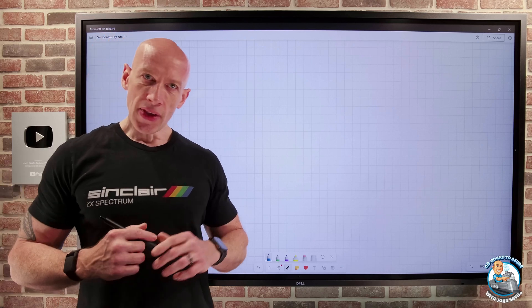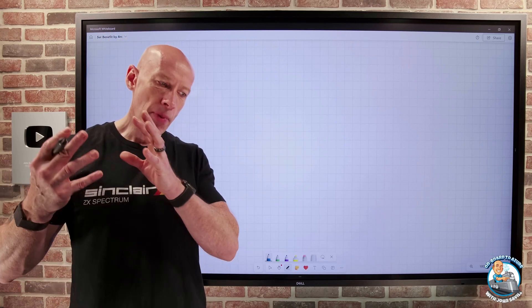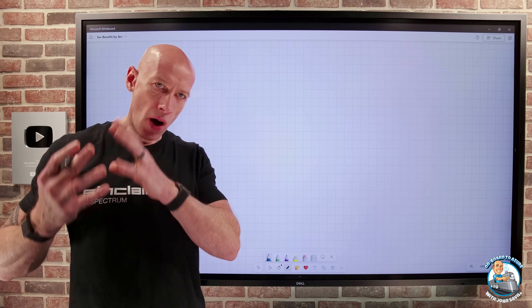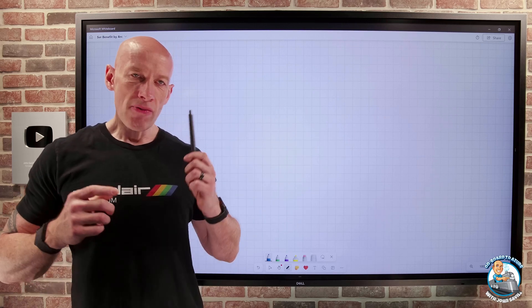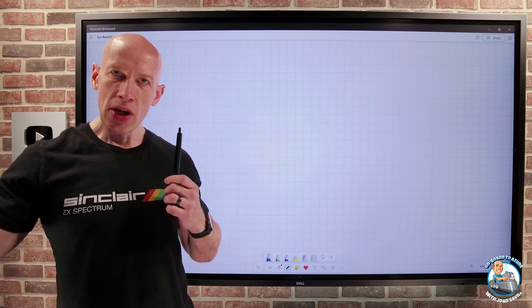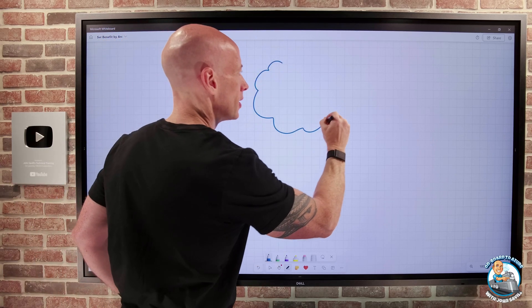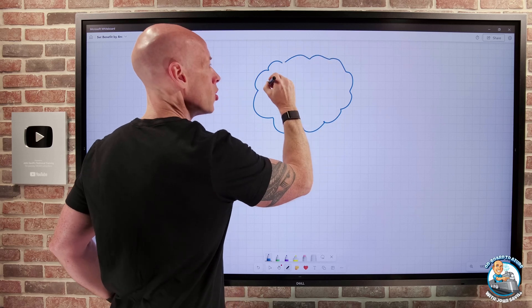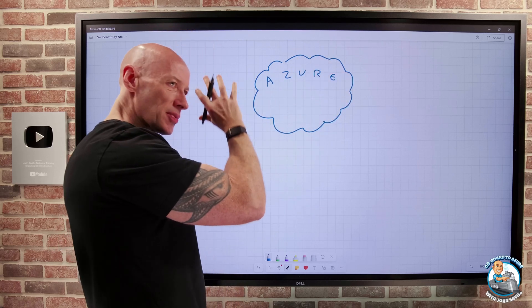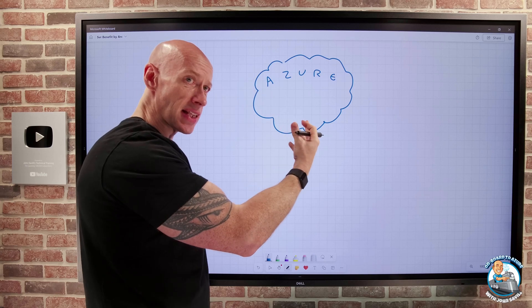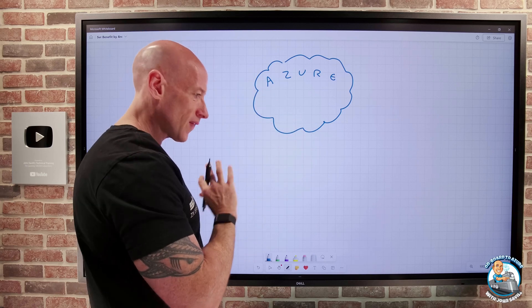Now, I've done a separate video before on the Arc capabilities when you Arc enable your servers, both Windows and Linux. But what we're really talking about is when we do that, if I think about what we have at Azure, and obviously, typically, when we think about Azure, we're hosting many different types of service in Azure natively: compute, data, AI, all those different fantastic things.